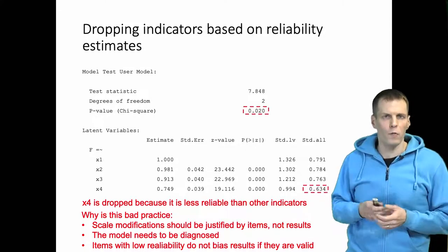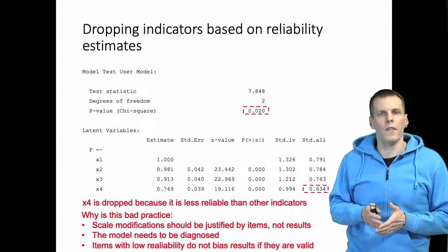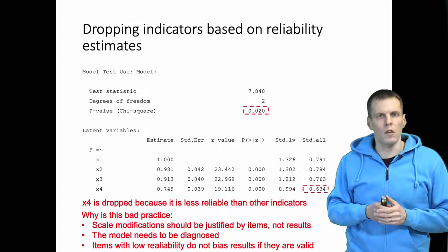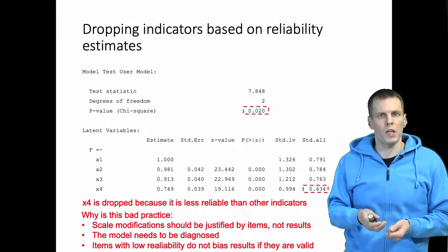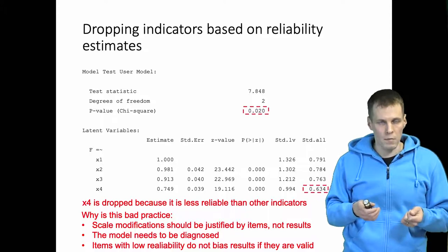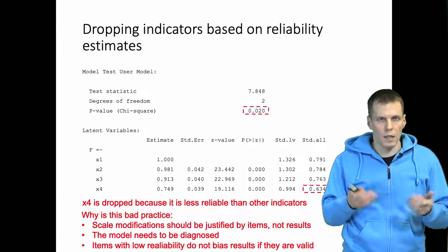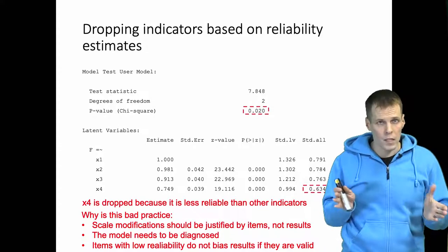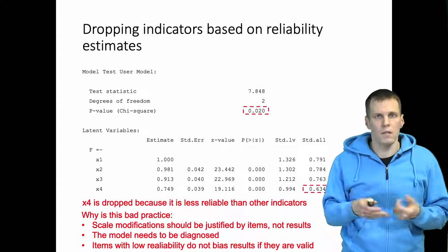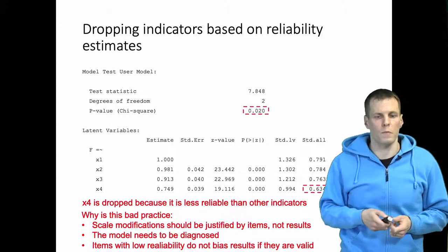So if you have a confirmatory factor analysis model and then you move to structural regression model, it is actually better to keep those unreliable items in the model than to drop them as long as the items are valid, which means that the model fits well. And if it doesn't, at least you know what is the source of misspecification.